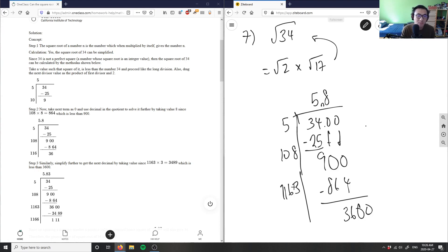We would realize that 1163 times 3 is closest to 3600, so this is our answer here. Square root of 34 is approximately 5.83. So this is if you were to approximate square roots.